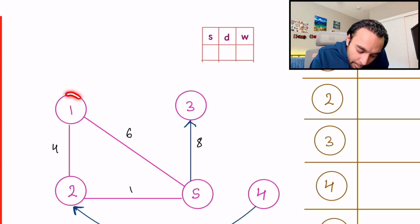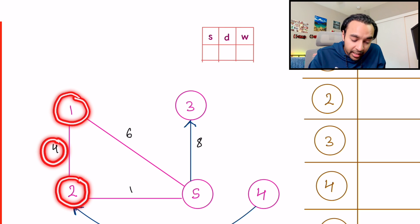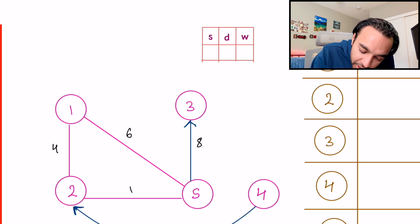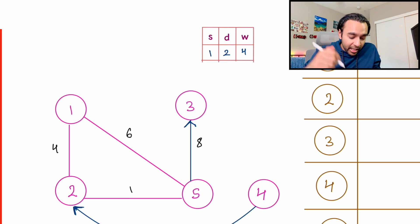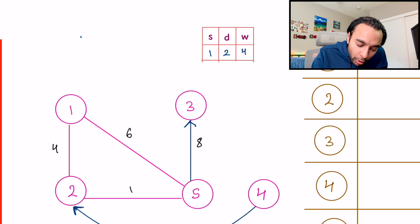For the first edge, my source is one, my destination is two, and the weight is four. So I create one object. And then since this edge is bi-directional, that means there is an edge between node two to node one as well, I will have one more object.